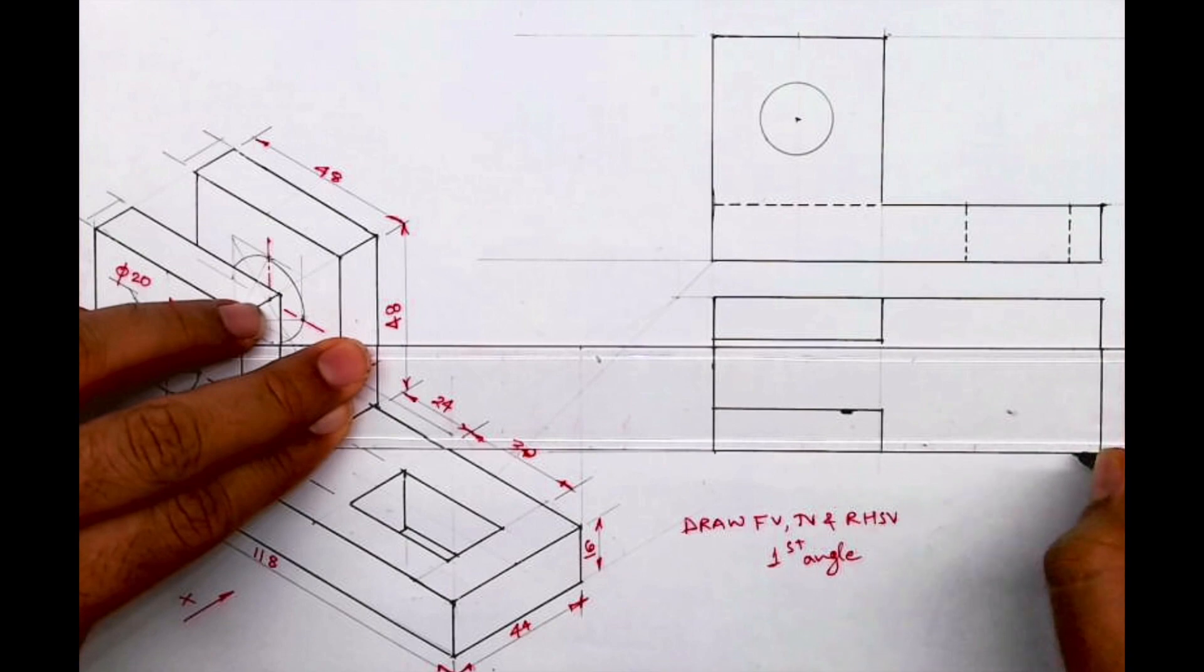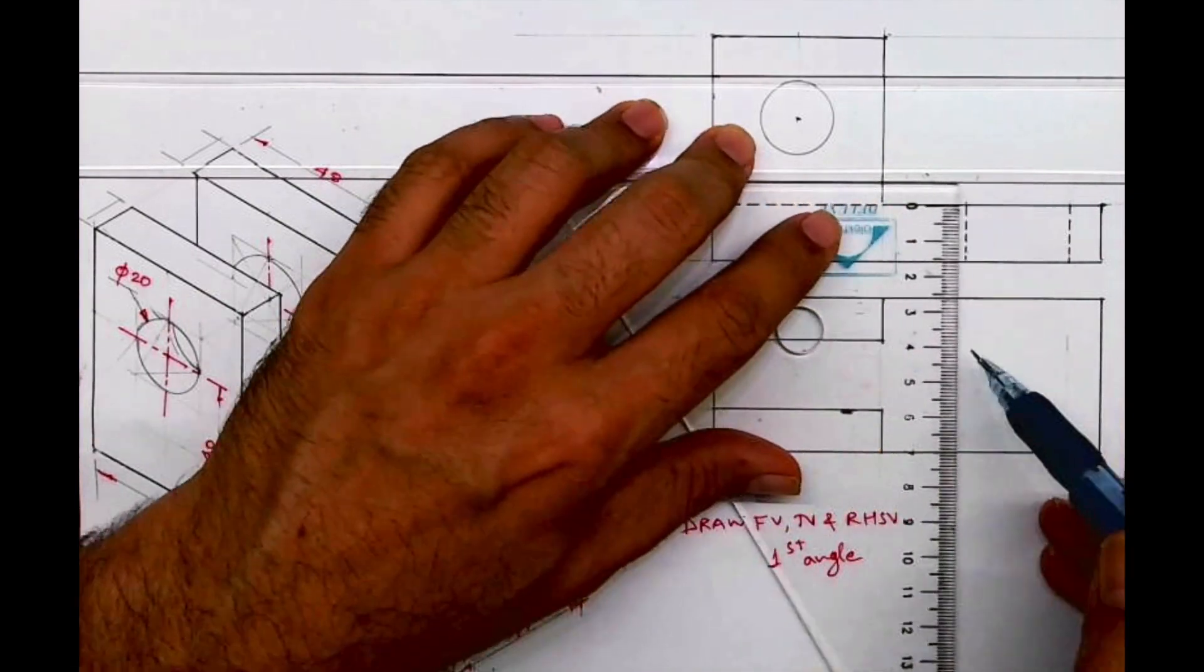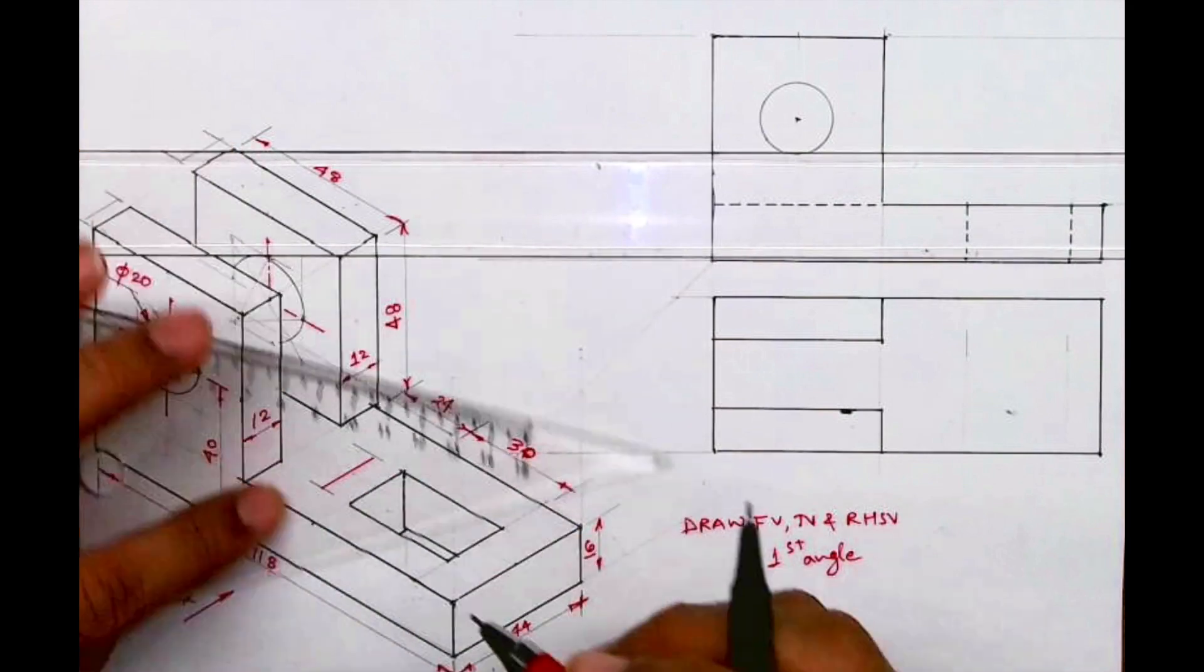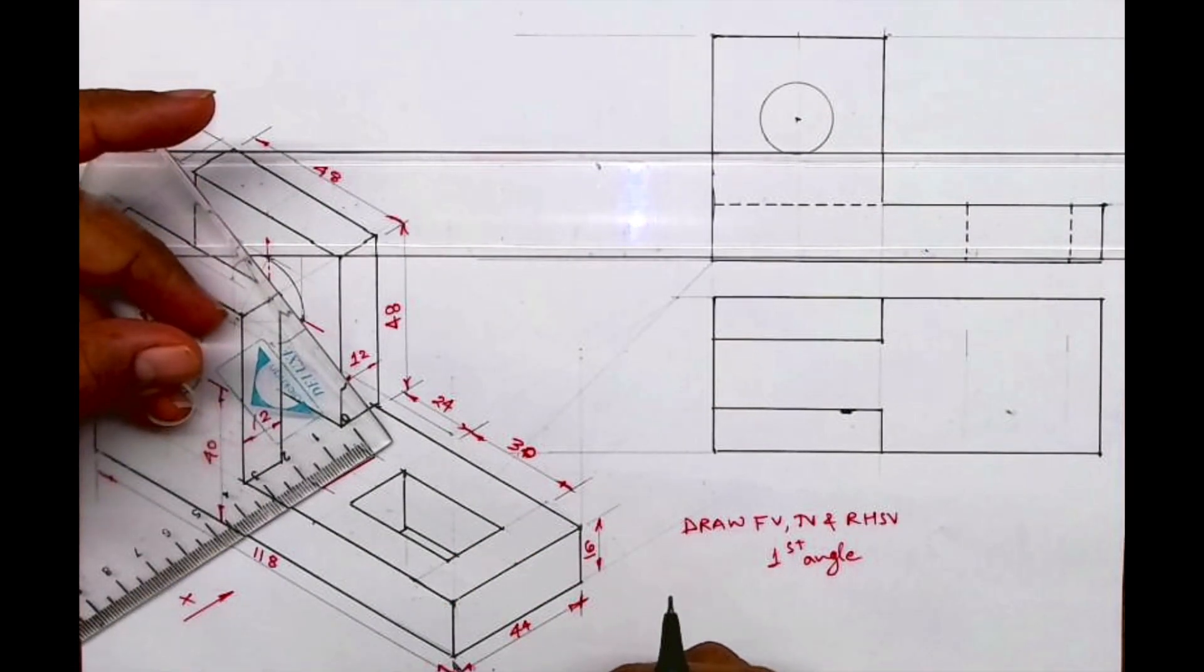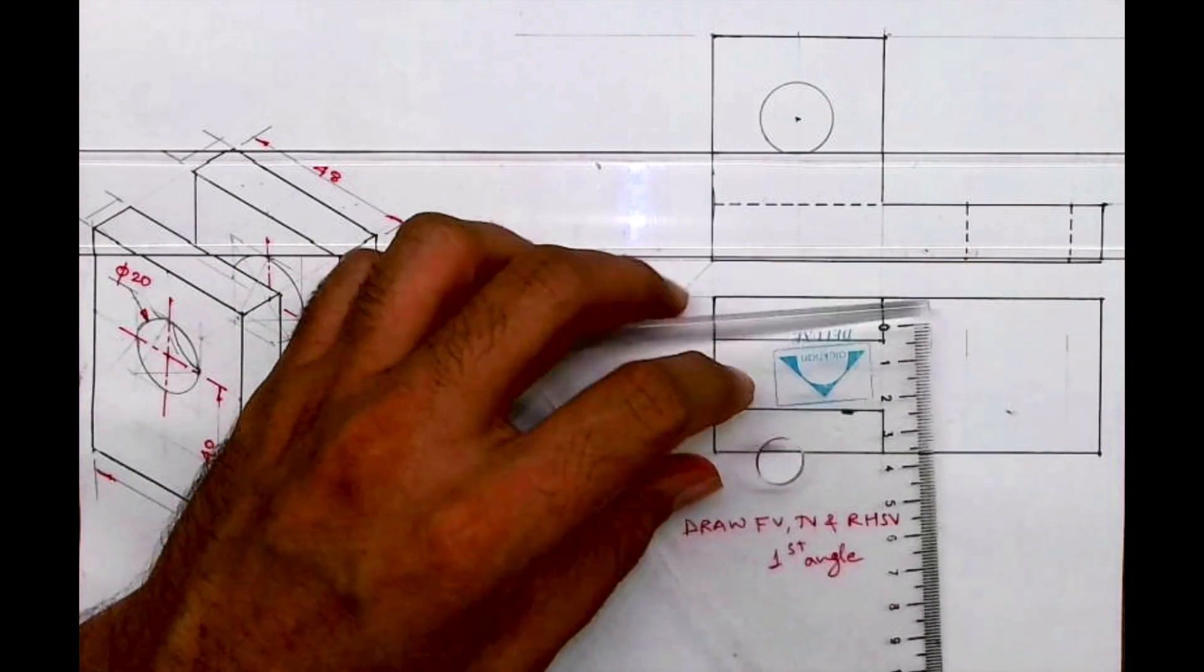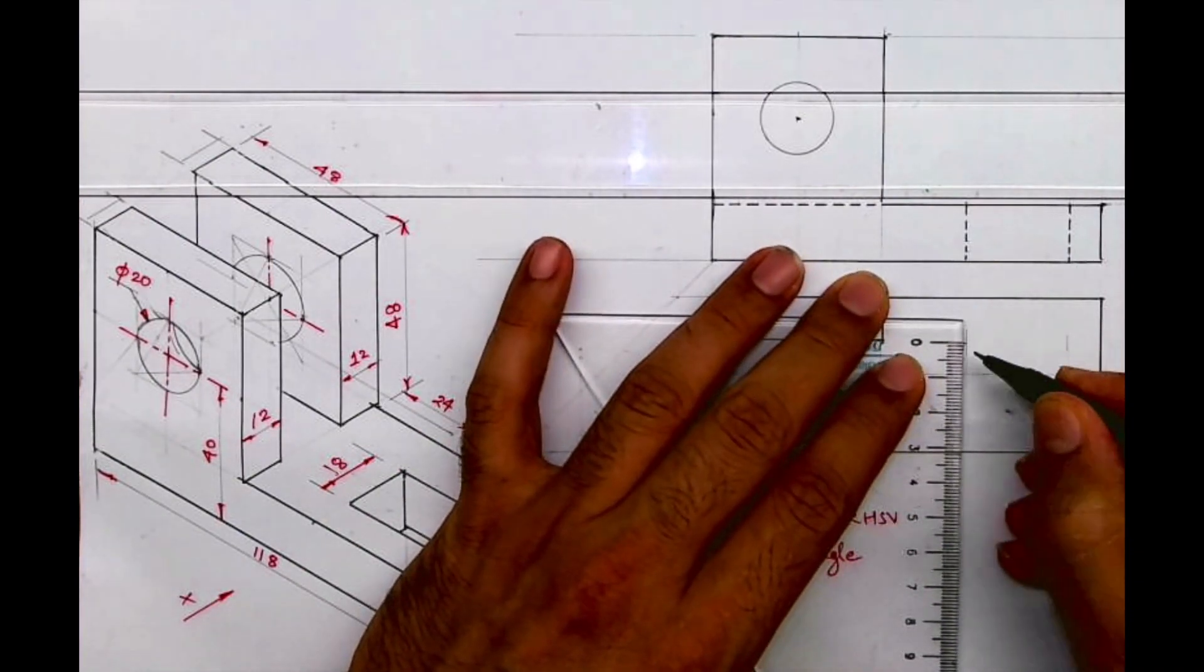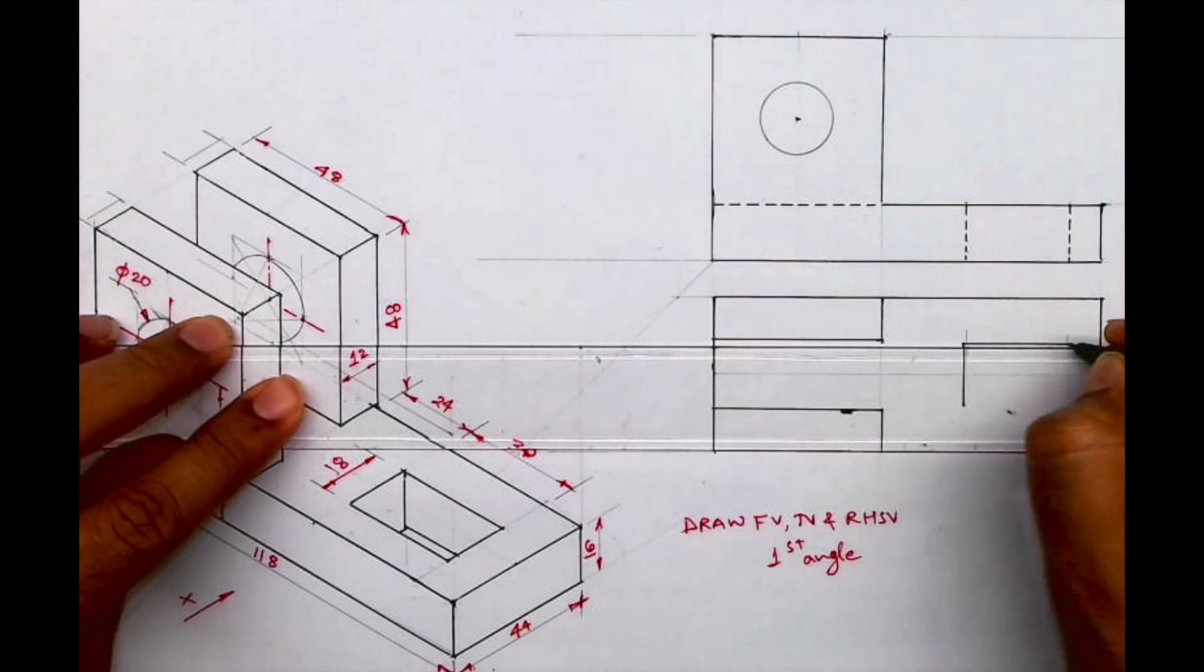Now we need to draw that slot of 30 by 18. This we can draw from the front view. It is 18, so from the center point we'll take 9 on each side and draw this rectangle of 30 by 18.